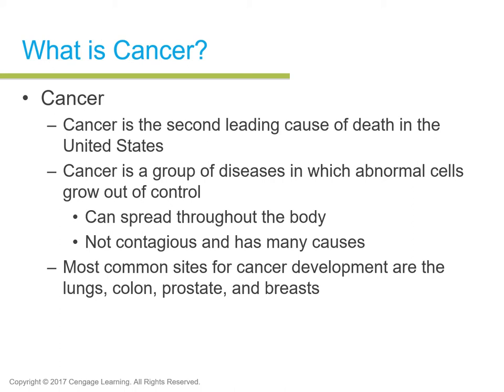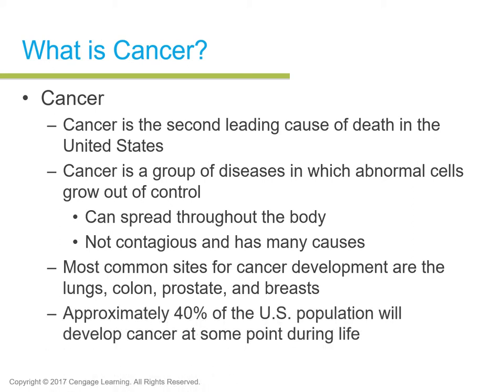There are other types of cancer — for instance, bile duct cancer, which is very rare and not yet well researched, and brain cancer. Approximately 40% of the US population will develop cancer at some point during life, so that's a huge percentage — which makes it all the more important to get educated and learn more about prevention.